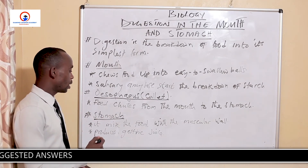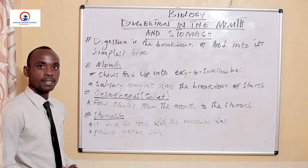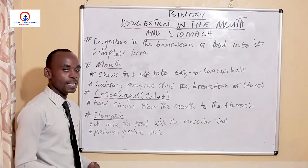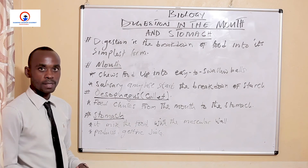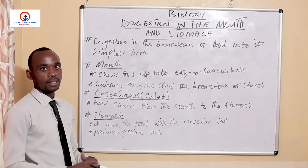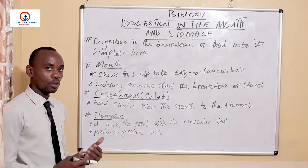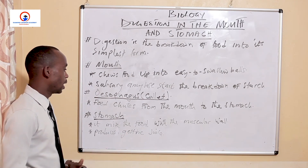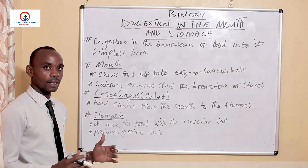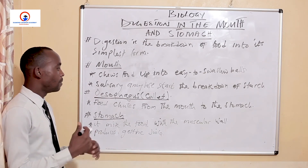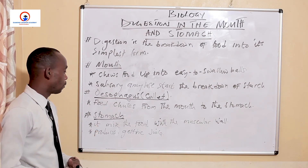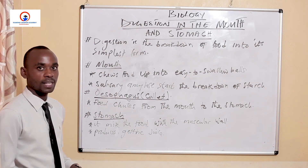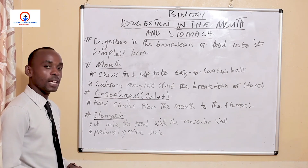Pepsin starts the digestion of proteins, breaking them down into smaller polypeptides. Rennin is mostly produced in children or babies because babies normally take in milk — the rennin coagulates the milk and turns it into soluble protein, which is then digested as a protein. It is also important to understand that the stomach has muscles responsible for mixing the food through the process of churning, enabling all the food in the stomach to be mixed with the gastric juice so that proteins can be digested.